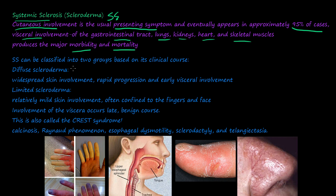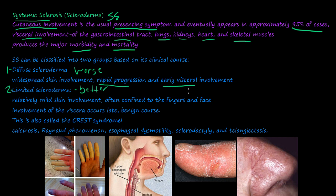Systemic sclerosis can be classified into two groups: one, diffuse scleroderma, and two, limited scleroderma. Diffuse is the worst, and limited scleroderma is the better of the two. Diffuse scleroderma presents with widespread skin involvement, more rapid progression, and early visceral signs of the disease.